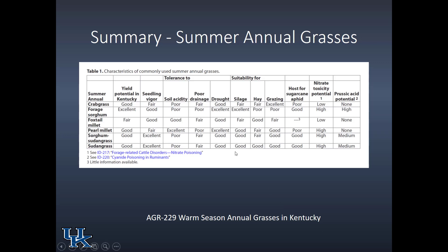You'll notice the species on the left-hand side from crabgrass all the way down to Sudan grass, and the characteristics along the top. Today we're going to focus a lot on nitrate toxicity potential and prussic acid potential, but you can also see other characteristics such as suitability for silage, hay, or grazing for all of these species.